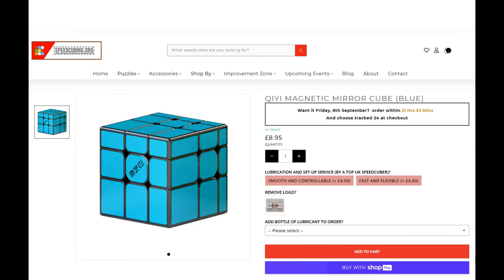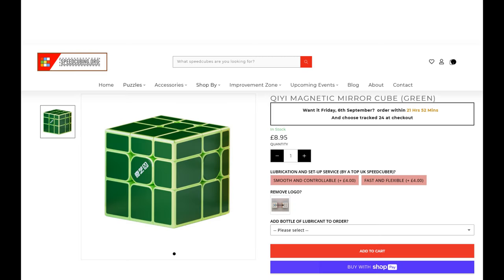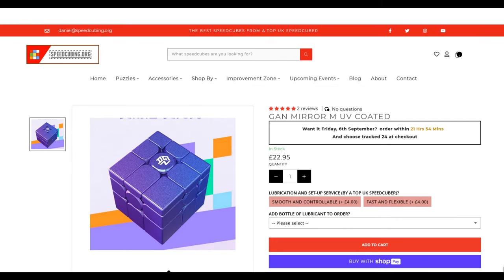It does appear that the Chi mirror wins this by a very small margin and is probably a slightly better choice for most people. However, if you prefer the UV coated nature of the GAN mirror and just want something that feels a bit more premium and looks a bit nicer, then the GAN mirror might be for you. But if you're looking for purely speed cube performance compared to the price, then the Chi mirror is probably going to be your best option. Thanks for watching, please like, comment, share, and subscribe, and tell me what you think of this new video format.